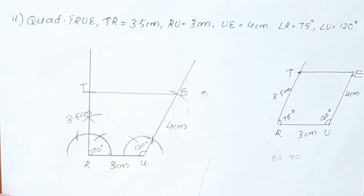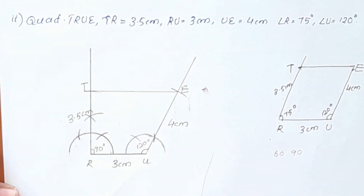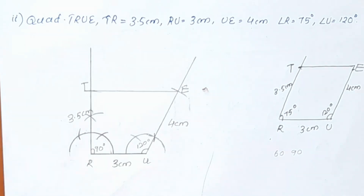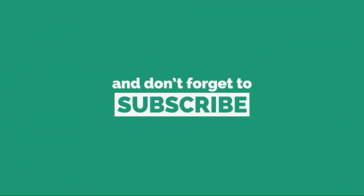Now quadrilateral TRUE has been constructed. We have constructed this using 3 sides and 2 included angles. This will be easy. Now we have Exercise 4.4, this is 4.5. In the next video, this is 4.5.